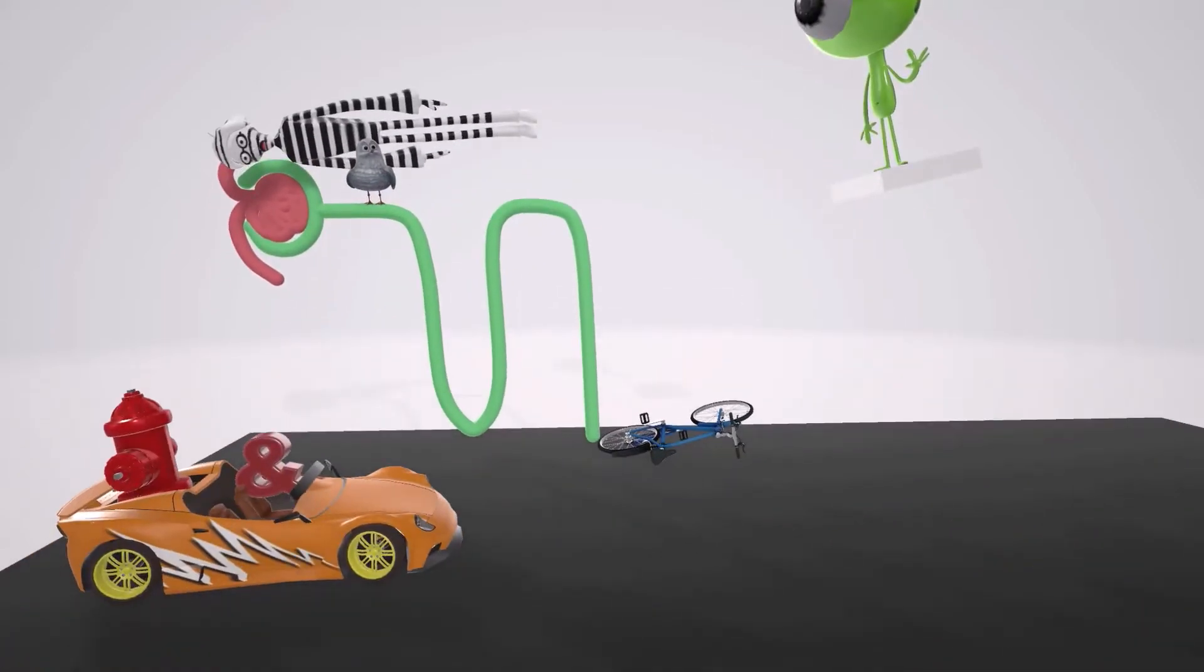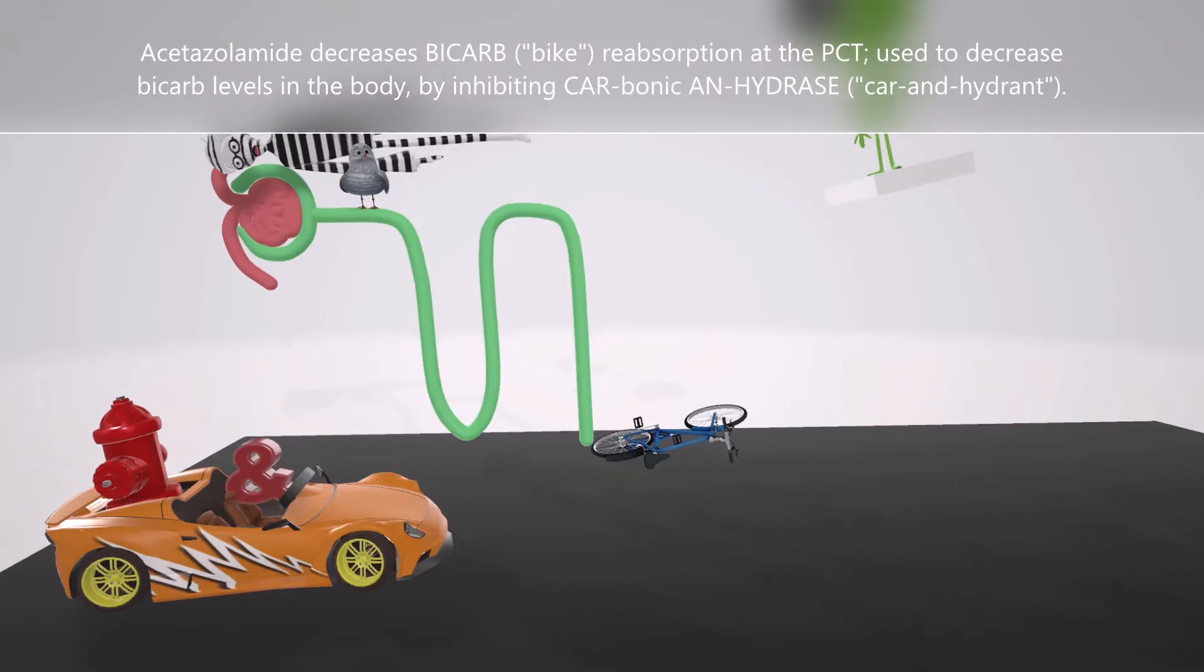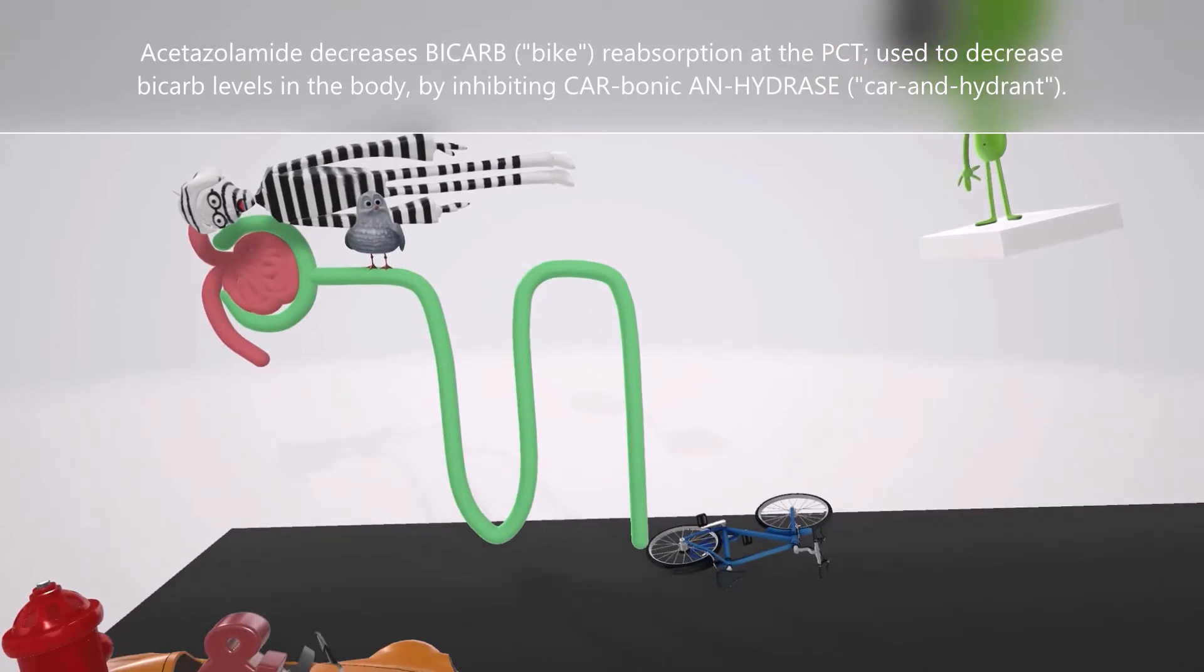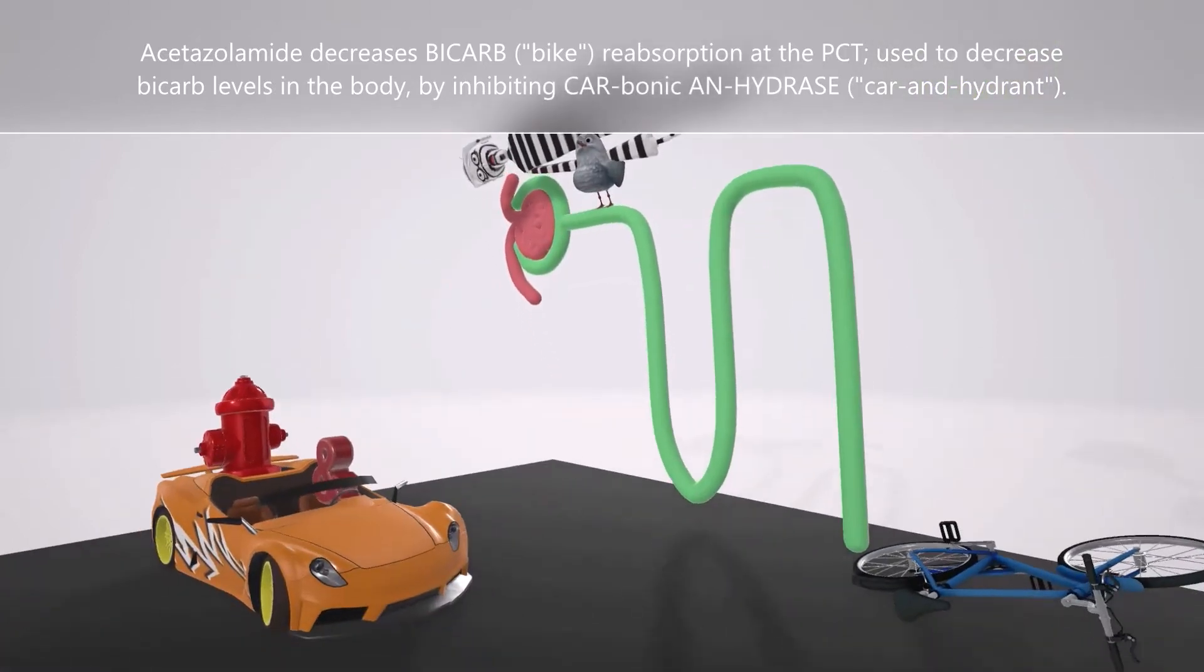Acetazolamide decreases bicarb reabsorption in the PCT. In this scene, you'll note that this seagull is standing on top of the PCT of this nephron, which reminds us that acetazolamide works at the PCT. This broken bicycle by the collecting duct reminds us that bicarb is released into the collecting duct and into the urine. That's why acetazolamide is used to decrease bicarb levels in the body.